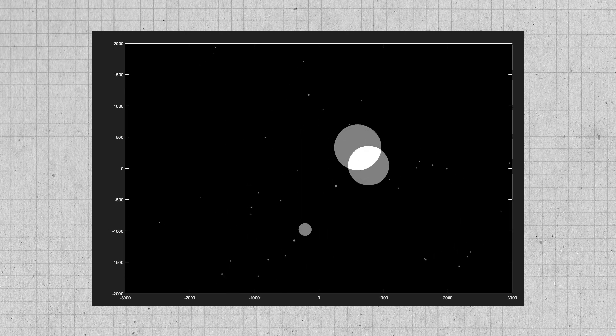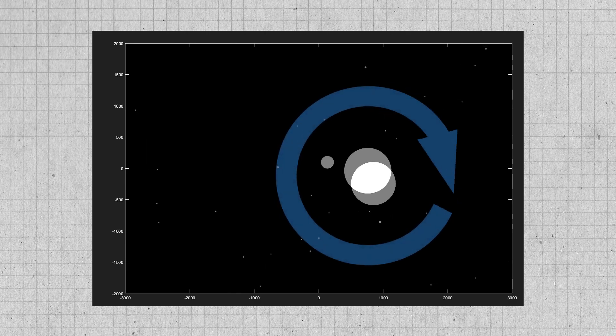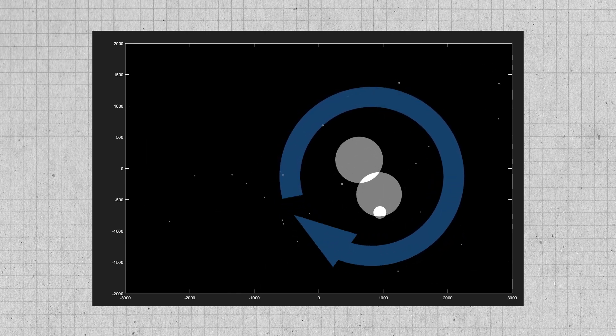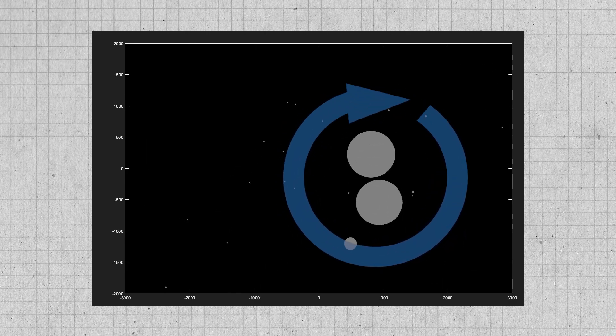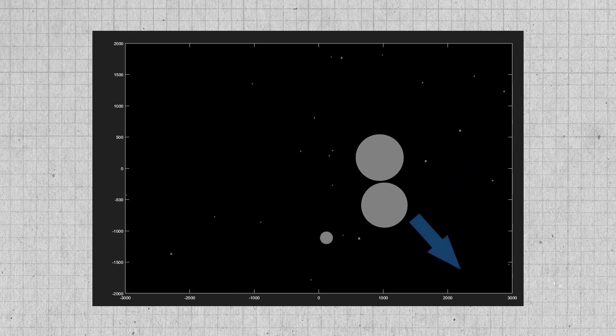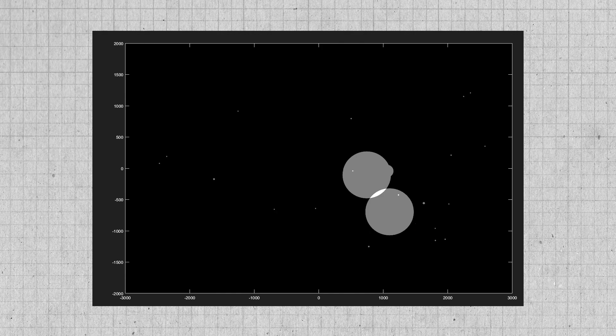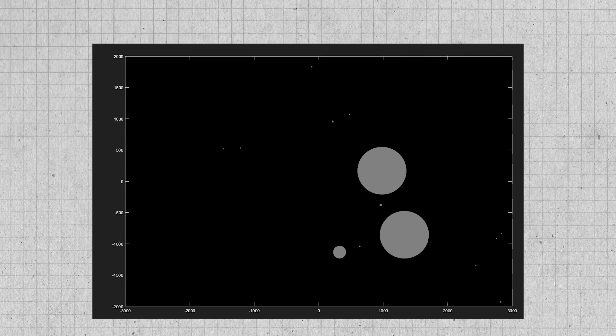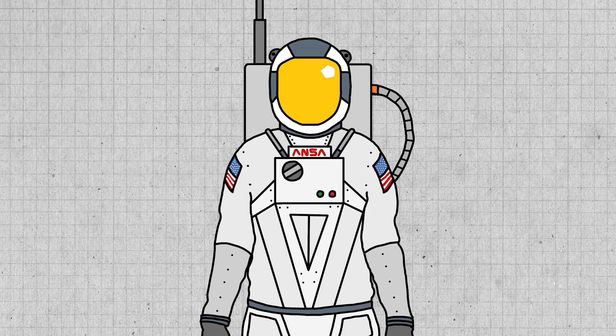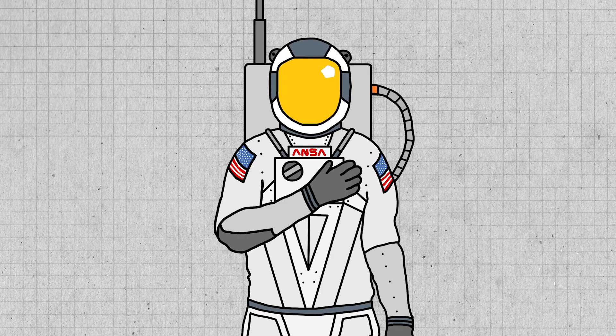In both simulations, the planets orbit clockwise because of that initial spin I added to the dust cloud. And the average velocity of the cloud results in both systems slowly drifting down and to the right. The particulars of these solar systems are very different from a human perspective, but the average angular momentum and linear momentum are mostly unaffected by this small change in initial conditions.